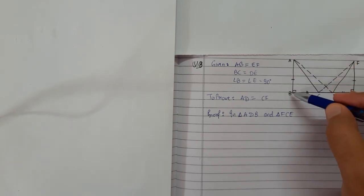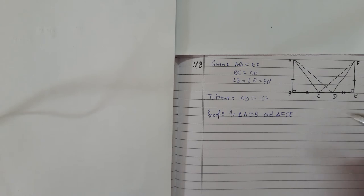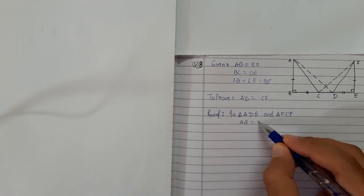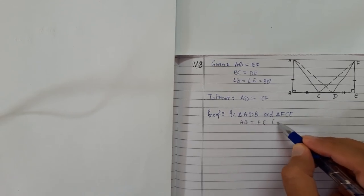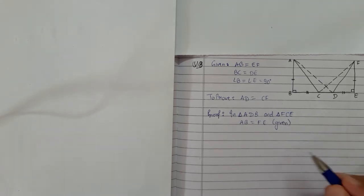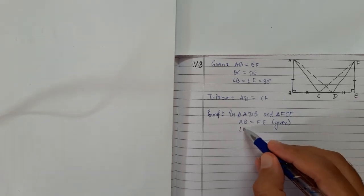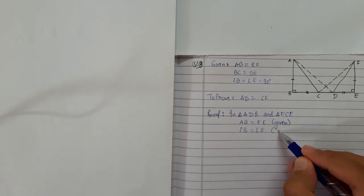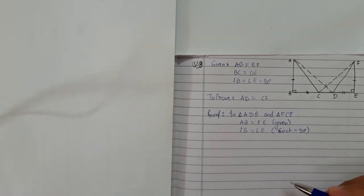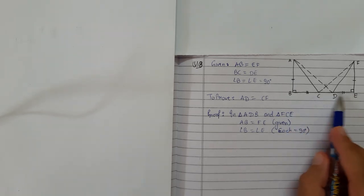In this triangle and this triangle, this equals this. First thing: AB equals FE, which is given. Second thing: 90 degree angle B equals angle E, each equals 90 degrees. Third thing is tricky.